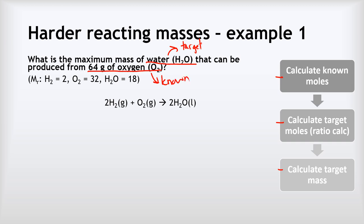The number of moles of O2 equals mass over Mr, which equals 64 grams divided by the Mr of oxygen which is 32, and that gives us 2 moles of oxygen. That is our first step done.